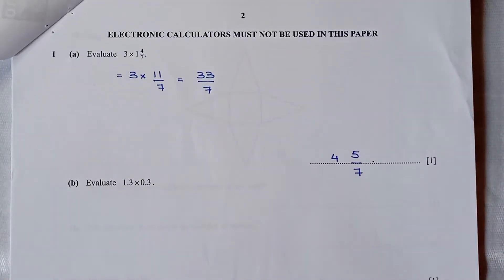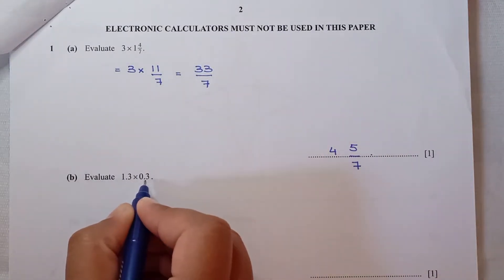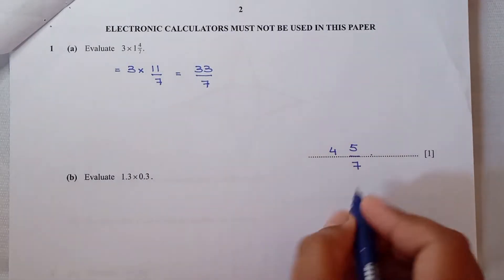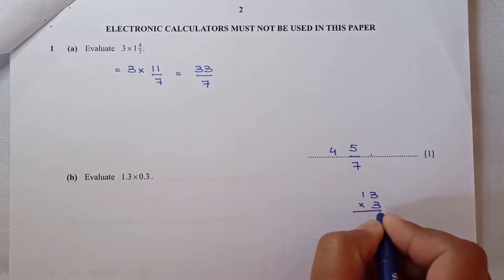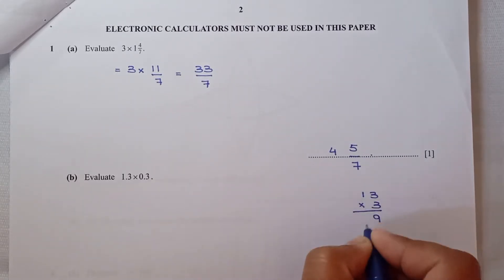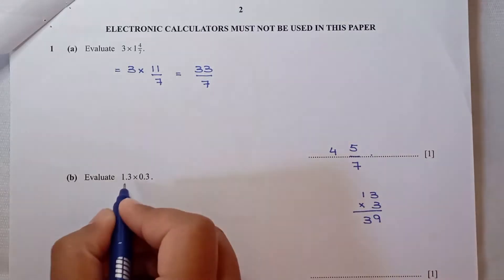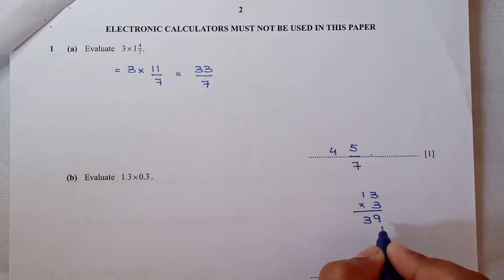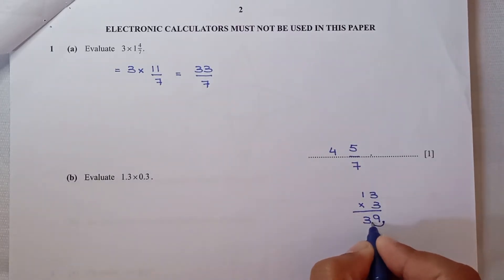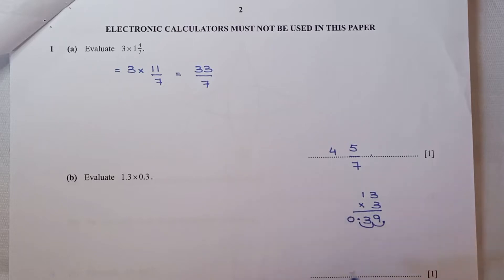For part B, we need to evaluate 1.3 times 0.3. If we do 13 times 3: 3 times 3 is 9, 3 times 1 is 3, giving 39. But we have 1 and 1 decimal places, so the total is 2 decimal places. We need to move the decimal point 2 units to the left, so the answer is 0.39.